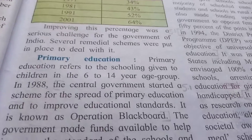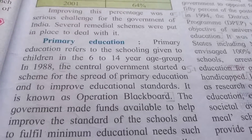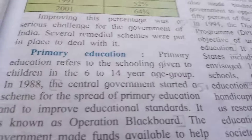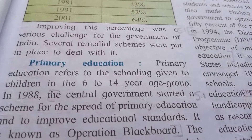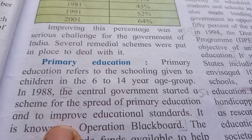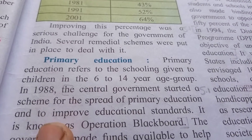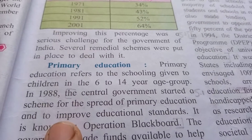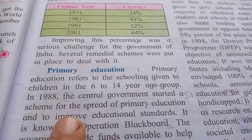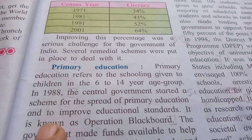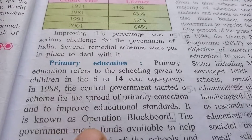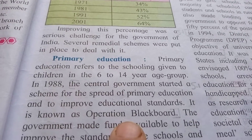Now, see the primary education. What is primary education? Primary education refers to the schooling given to children in the 6 to 14 years age group. So in 1988, the central government started a scheme for the spread of primary education and to improve educational standards. It is known as Operation Blackboard.